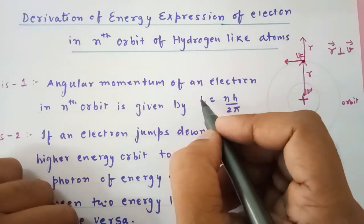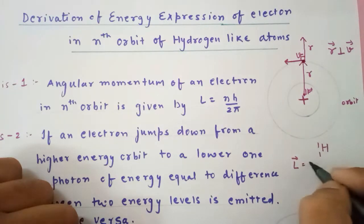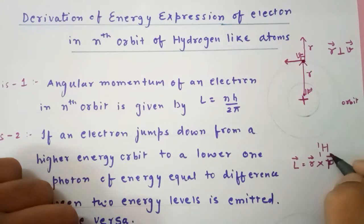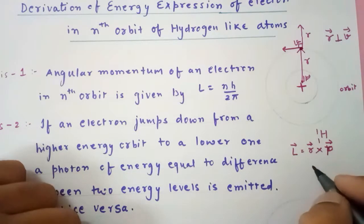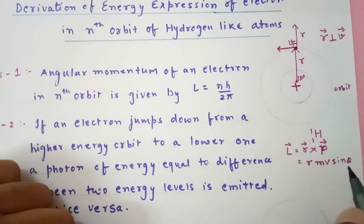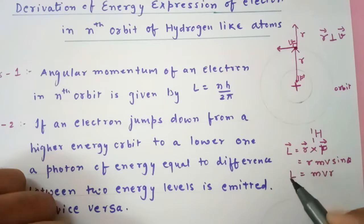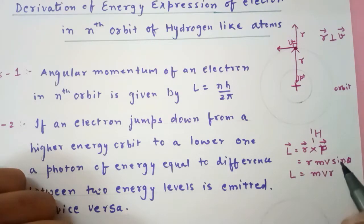Angular momentum L is actually r cross p, or we can write it as r·p·sin θ. Since p equals mv, this gives mv·r·sin θ, where θ is the angle between v and r, which is 90 degrees. So it simplifies to simply mvr. Throughout this lecture we will write L as mvr because the angle between r and v is 90 degrees.